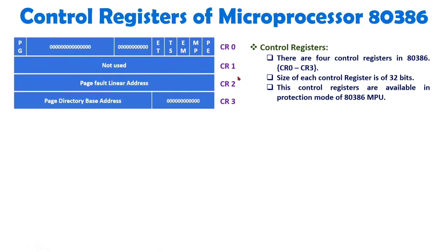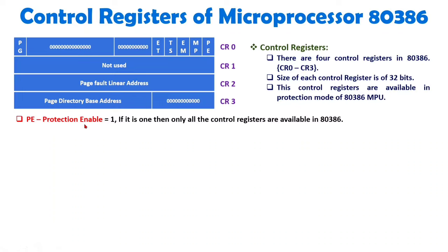There are 4 control registers — CR0, CR1, CR2, and CR3 — each having a size of 32 bits, available in protection mode only. First, you should know what the PE bit is. PE means Protection Enable. Whenever this bit is equal to 1, all the control registers are available, because when PE equals 1, microprocessor 80386 enters into protection mode, and in that mode all these control registers are available.